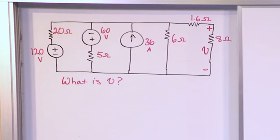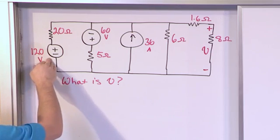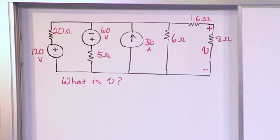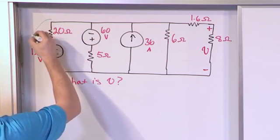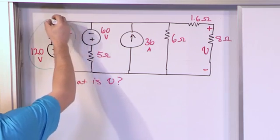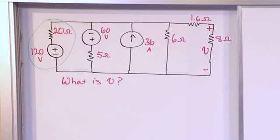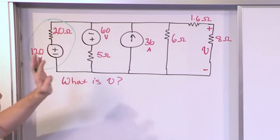The first thing that jumps out at you is the fact that we have here a voltage source in series with a resistance. So we can actually do a source transformation to change that into a current source in parallel with this 20 ohm resistor.